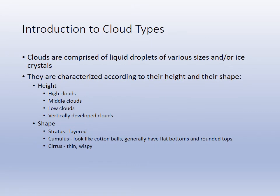When looking at cloud types you must consider both height and shape. Stratus means layered; cumulus are fluffy cotton balls; cirrus are thin and wispy. All three of those forms can exist high in the atmosphere as ice crystals, in the middle atmosphere as a mixture of ice and water droplets, or at low levels as water droplets.